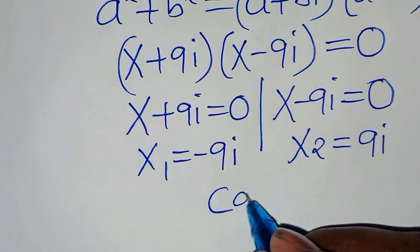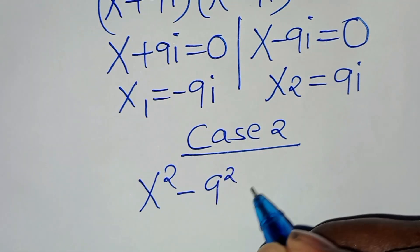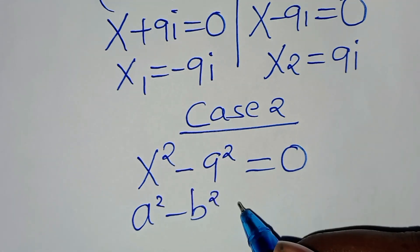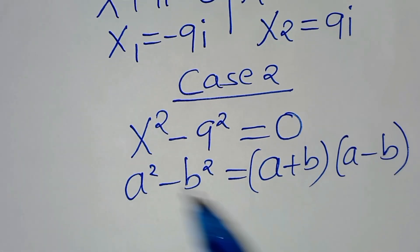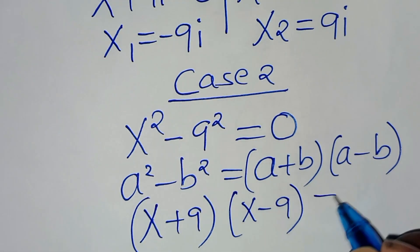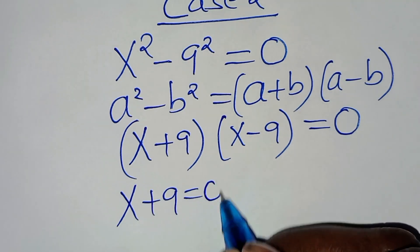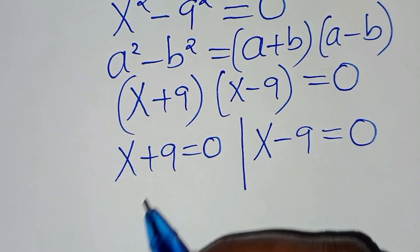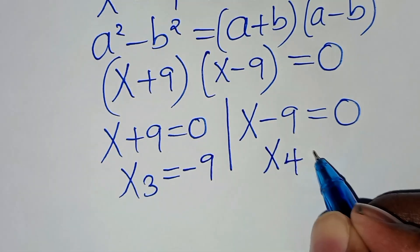Let's proceed to Case 2. We have x squared minus 9 squared, equal to 0. This equation is in the form of a squared minus b squared, which we can express as (a plus b)(a minus b). From this equation we have (x plus 9)(x minus 9) equal to 0. So x₃ is equal to minus 9, and x₄ is equal to 9.